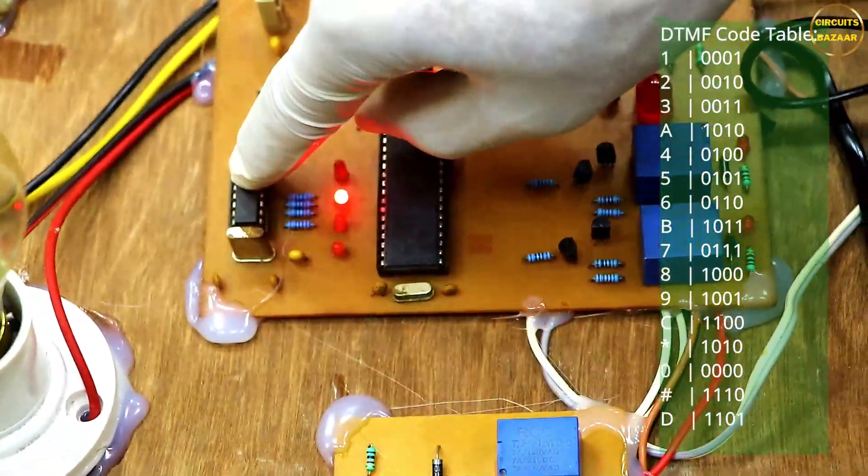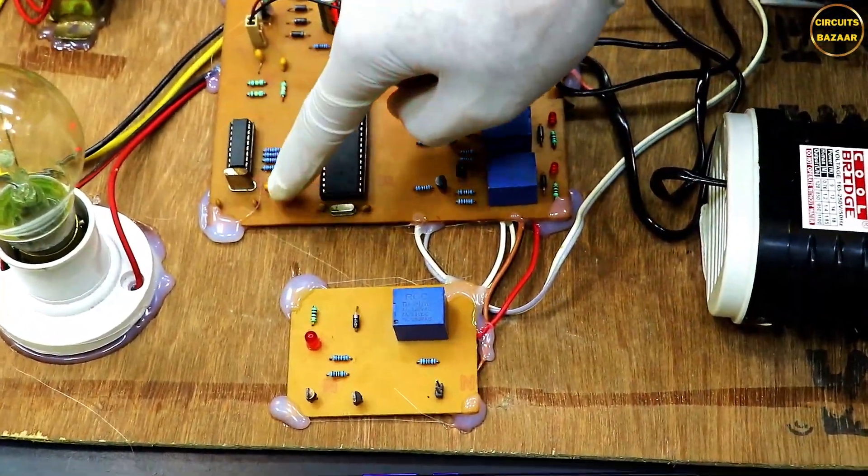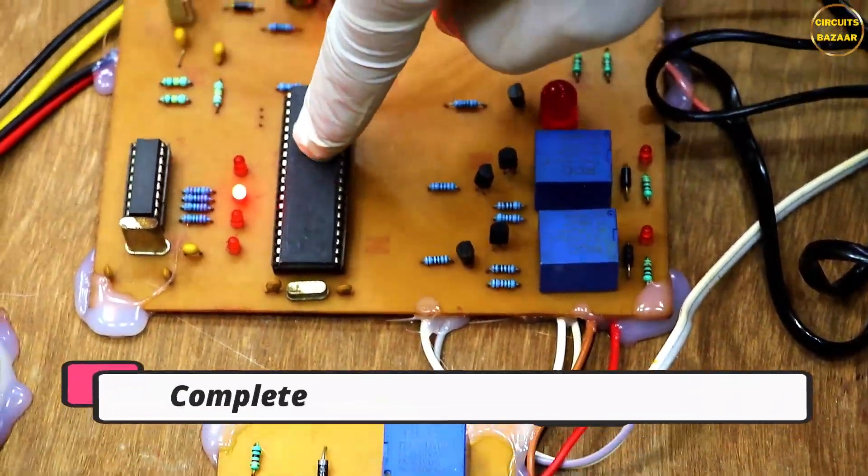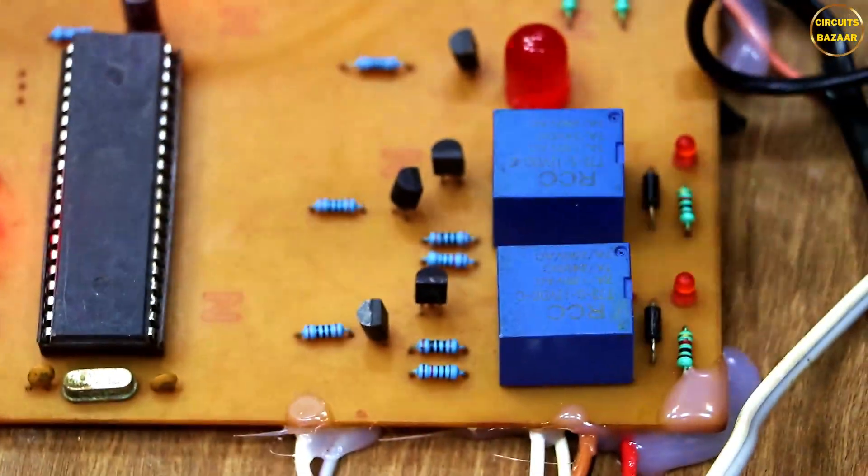Any IC you can use. Then this 4 bit data is fed to the microcontroller. Then the microcontroller will decide according to this data which relay the microcontroller should turn on. So this is the simple working.